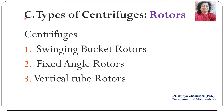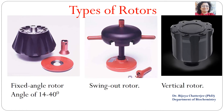The third classification is based on rotors: swinging bucket rotor, fixed angle rotor, or vertical tube rotors. The fixed angle rotor has an angle of 14 to 40 degrees of the bucket from the axis of rotation. The swing-out rotor has buckets that swing out while the axis is rotating. The vertical rotor has the bucket angle exactly parallel to the axis of rotation.